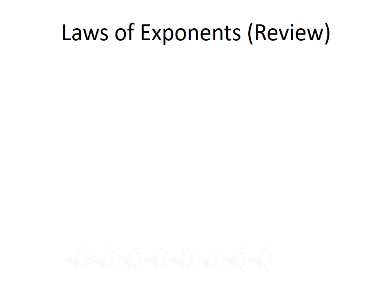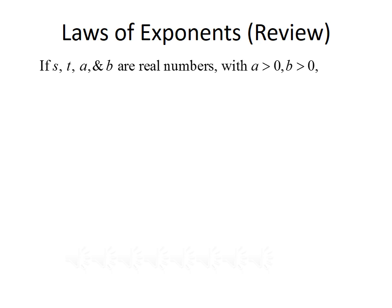We should also review some of the laws or properties of exponents. If s, t, a, and b are all real numbers, with a and b both positive, then the following rules hold. First, a to the s times a to the t equals a to the s plus t — if you multiply two exponential functions with the same base, you add the exponents. Second, a to the s raised to the t power equals a to the s times t — raising an exponent to another exponent, you combine by multiplying the exponents.